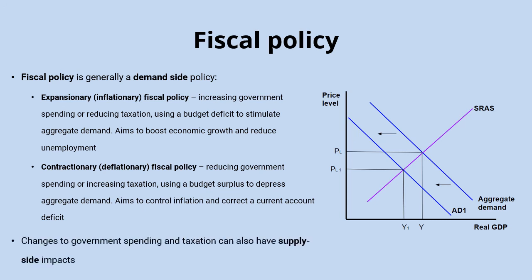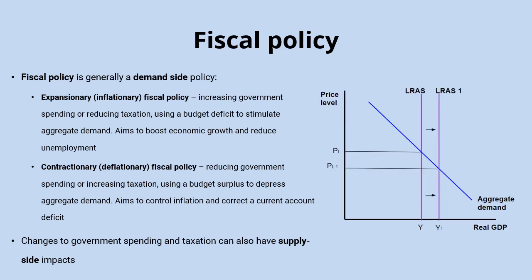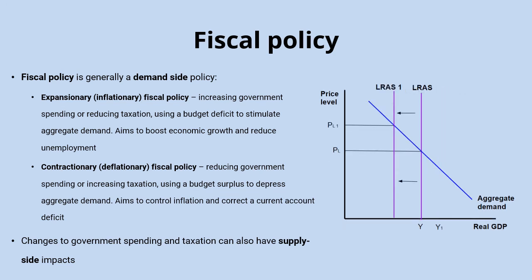It is worth being aware that while fiscal policy is predominantly seen as working on the demand side, there will inevitably be supply-side impacts of changes in government spending and taxation as well. For example, if rising government spending is put into infrastructure projects, increasing the productive capacity of the economy, that would increase long-run aggregate supply. Conversely, an increase in corporation tax could discourage businesses from investing, decreasing long-run aggregate supply by reducing the capital stock.